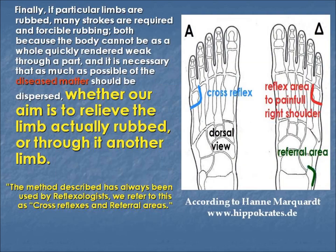Continuing on Celsus' text, again we read about the disease matter — please go and read the text yourselves, it has so much useful information. But I would like to finish here by reading: whether our aim is to relieve the limb actually rubbed, or through it another limb. Again, we have mention here of cross reflexes and referral areas.